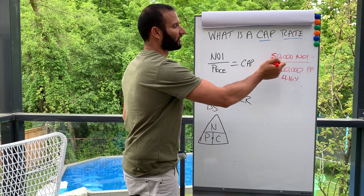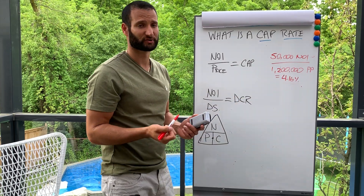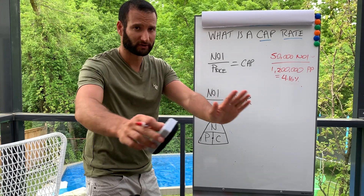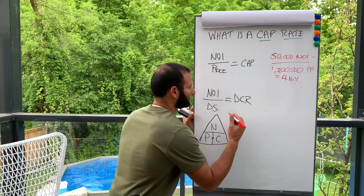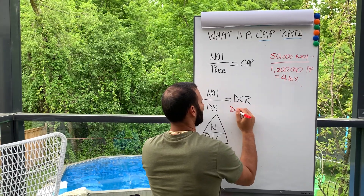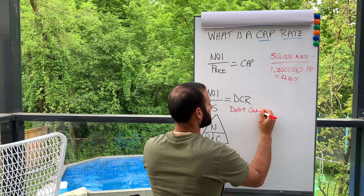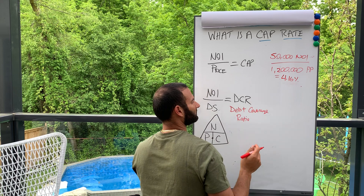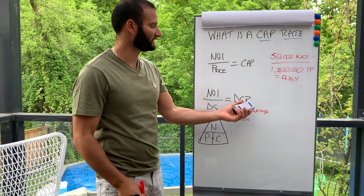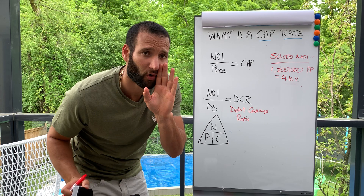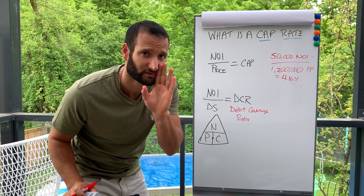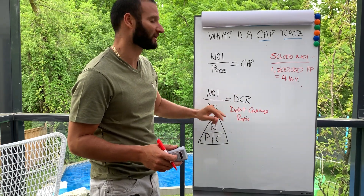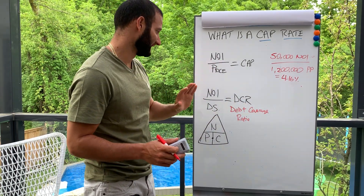Another very important number that no one talks about is DCR — Debt Coverage Ratio. That's how the bank qualifies your mortgage. They do look at cap rate, but ultimately they look at the Debt Coverage Ratio. It is simply a ratio of your net income over your debt service.